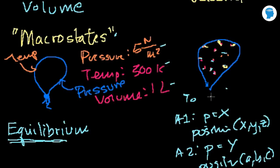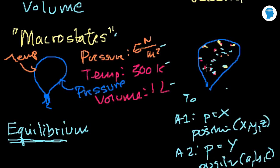At time equals 0 you might list 10 to the 20-something microstates of all the atoms, but a second later you'll have a completely different microstate, because all these atoms will have bumped into each other and exchanged momentum. So even though we're at thermodynamic equilibrium and our macrostates stay the same, our microstates are changing every gazillionth of a second — they're constantly changing. That's why in thermodynamics we tend to deal with macrostates.